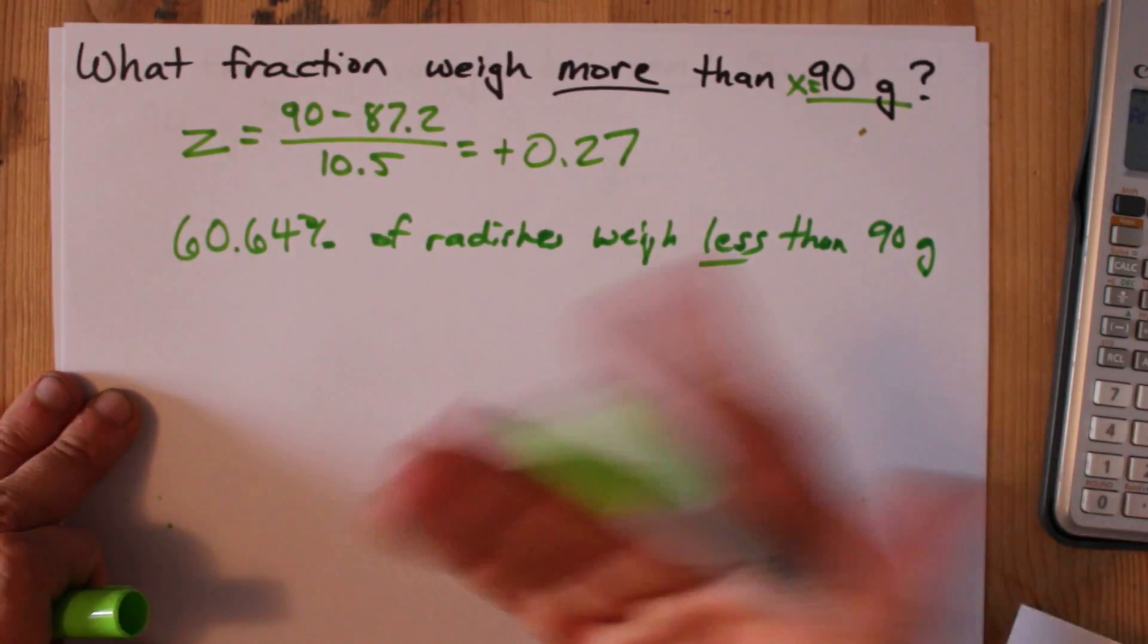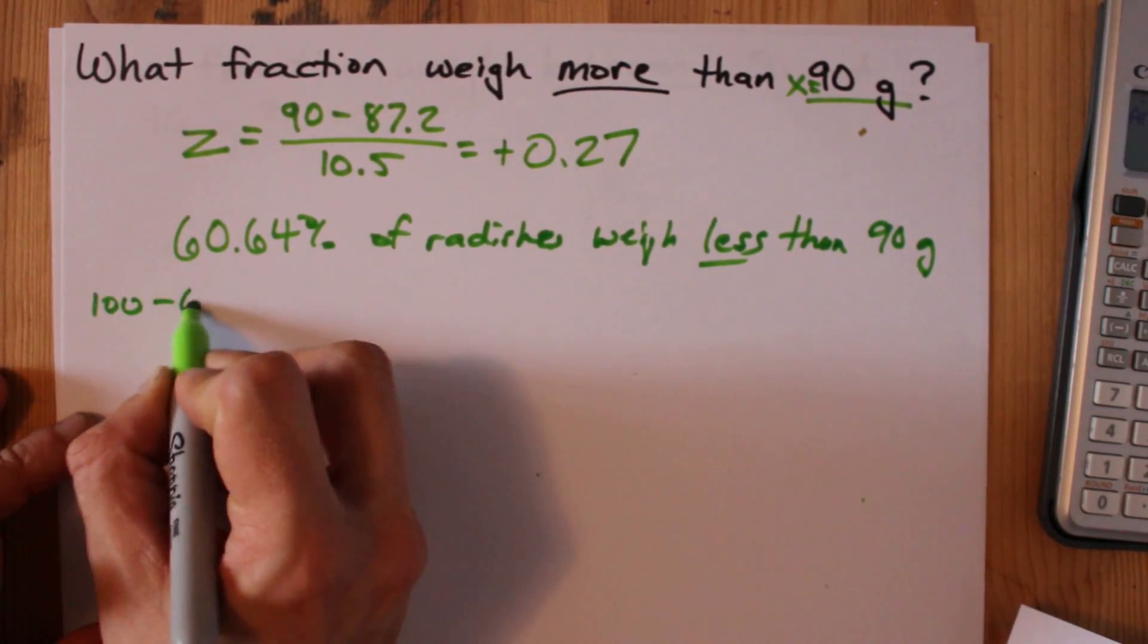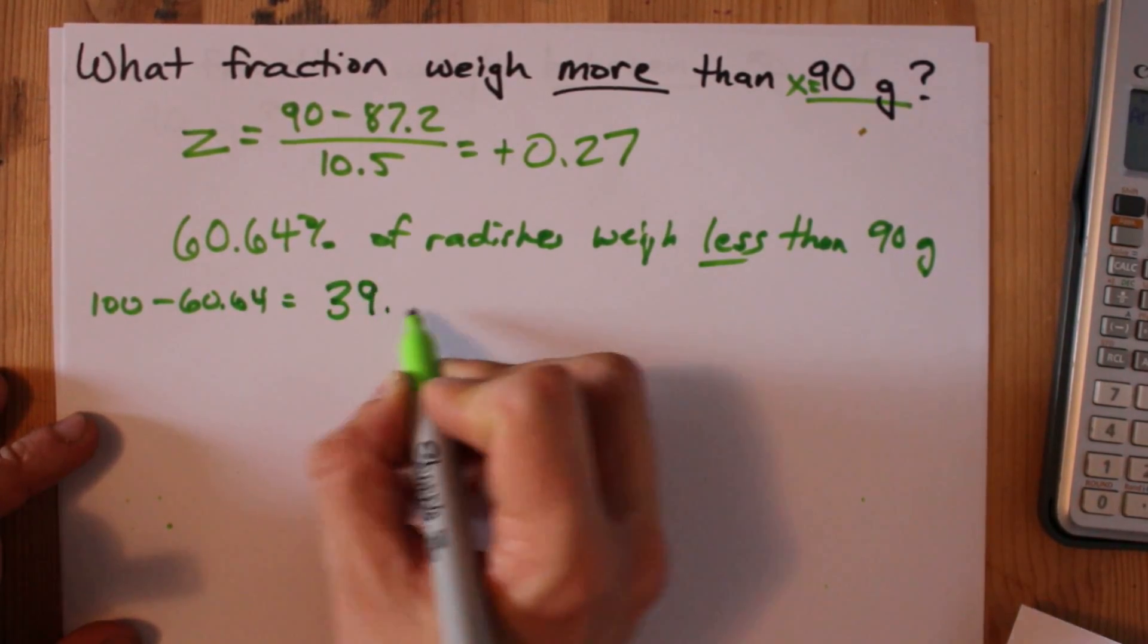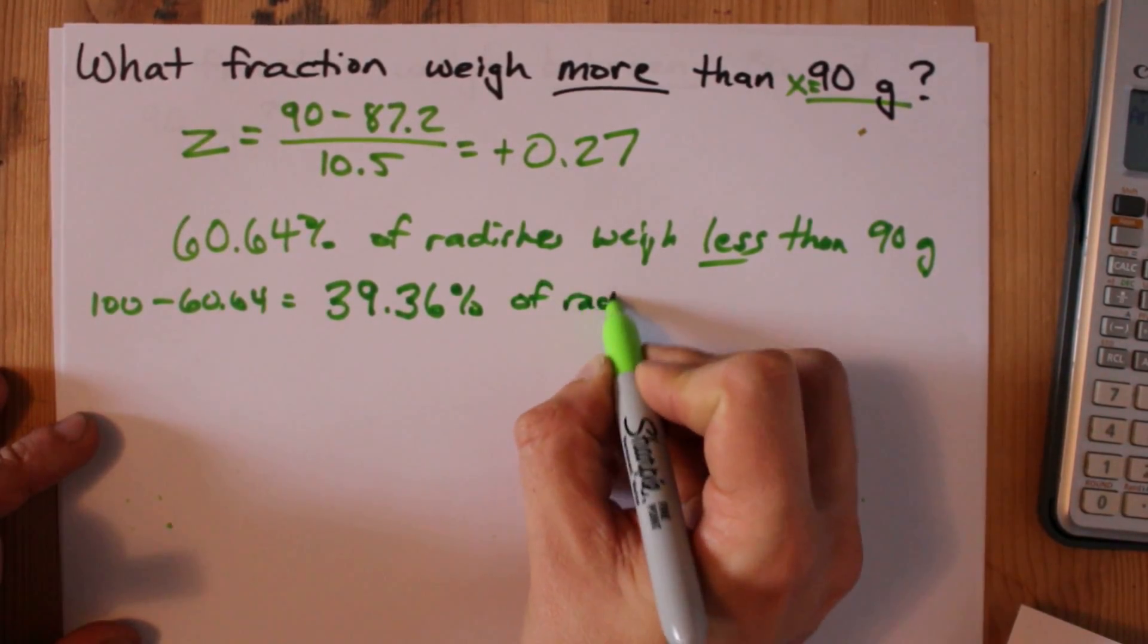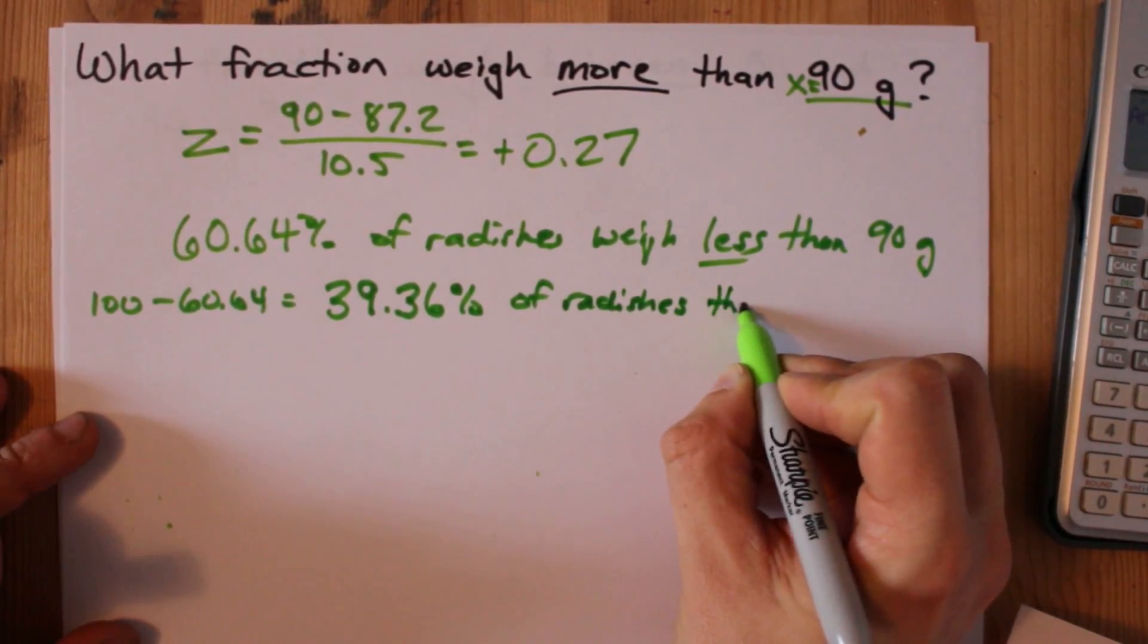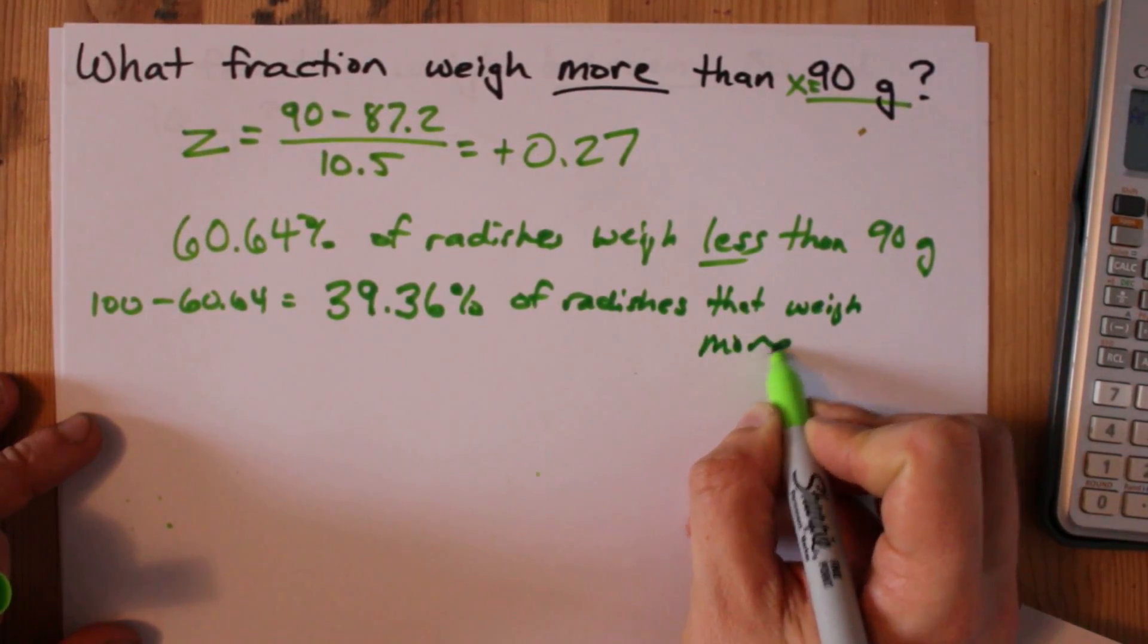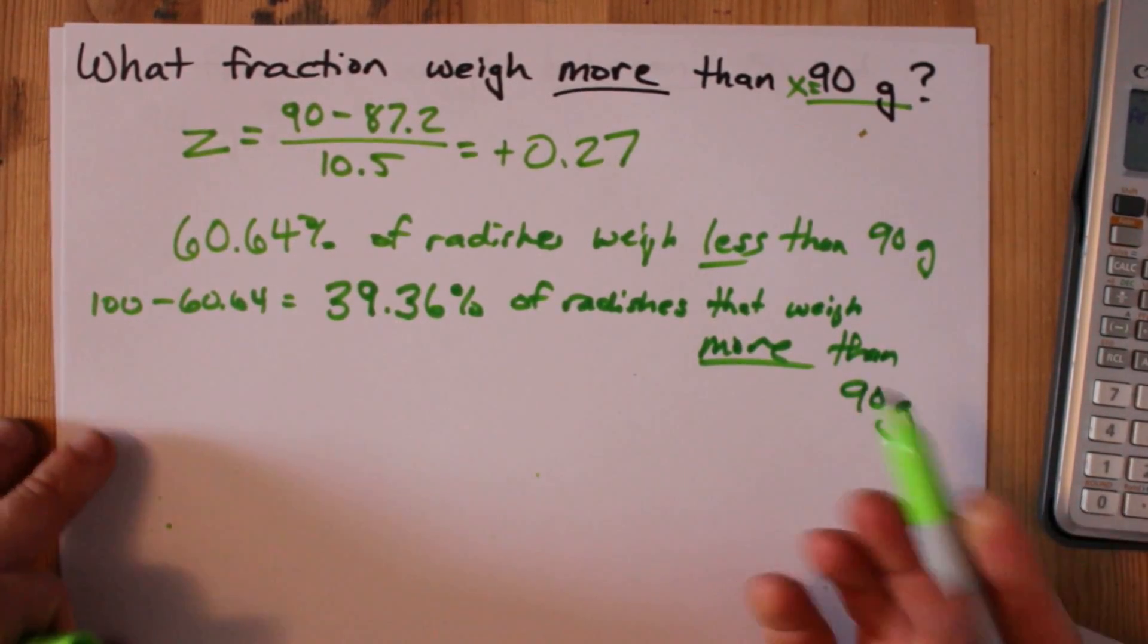If you want the percent that weighs more, you just have to subtract this from 100. 100 minus 60.64 gives me 39.36% of radishes that weigh more than 90 grams. Pretty easy.